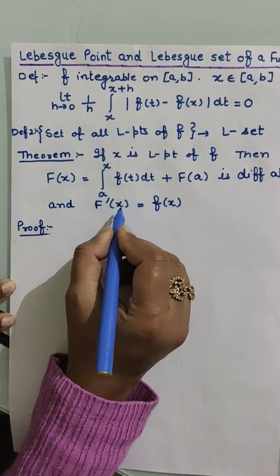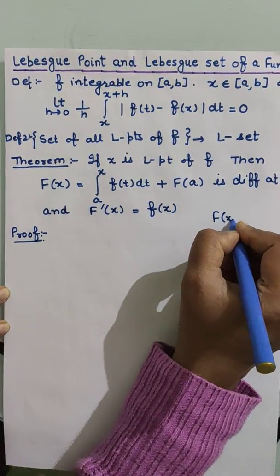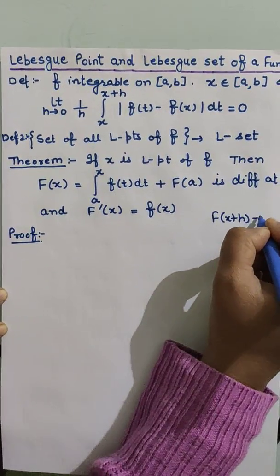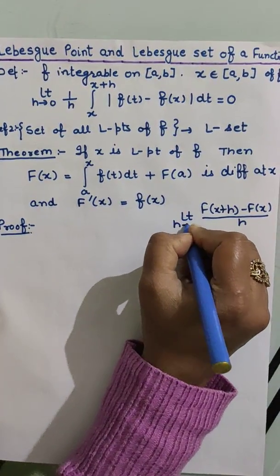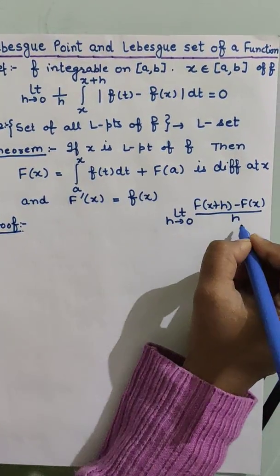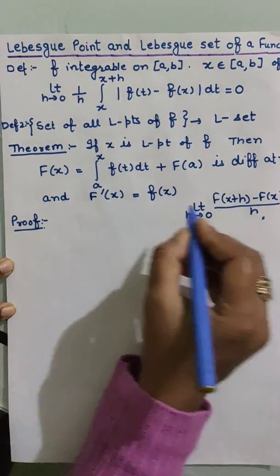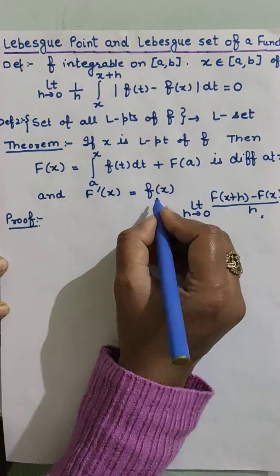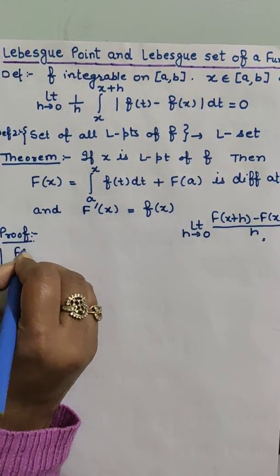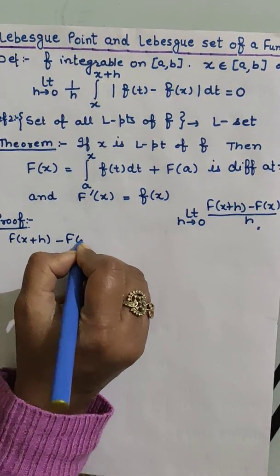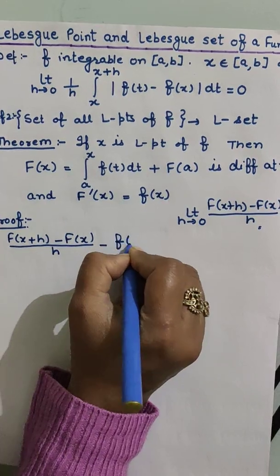Now to prove a function to be differentiable, we have to prove that the limit [F(x+h) - F(x)]/h exists. We want to prove that this limit is equal to f(x). So to start with, we will consider [F(x+h) - F(x)]/h.